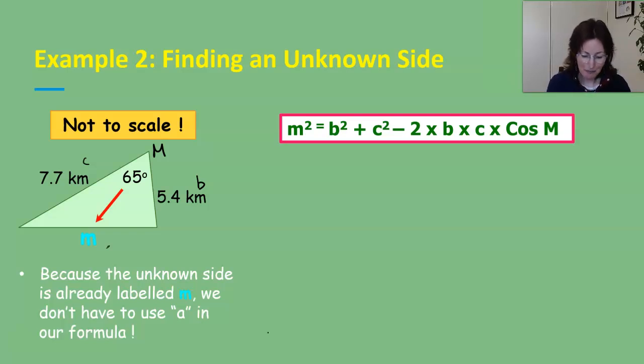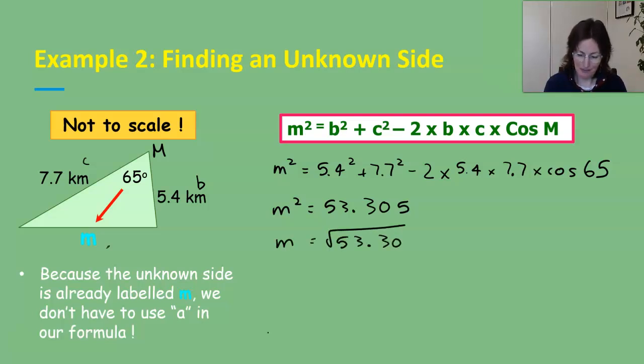We've got that written there for us so m squared is equal to the sides squared adding them together, so b I've said 5.4 squared plus 7.7 squared subtract 2. I'll use a multiply this time as opposed to the brackets multiplied by b which is 5.4 multiplied by c 7.7 multiplied by cos of the angle which is 65. Typing that all in, please do type it in just so you're double checking that your calculator is doing the same as me, and we get 53.305 that's rounded to three decimal places. We need to undo the square by doing a square root and then our final answer again is rounded so approximately equal to 7.30 and the units for that is kilometers. So that was two examples when we needed to try and find a side.